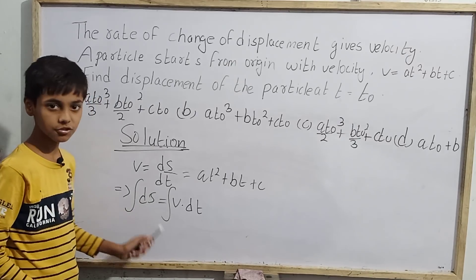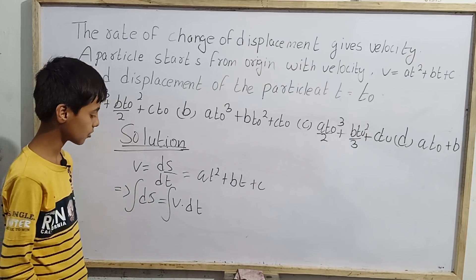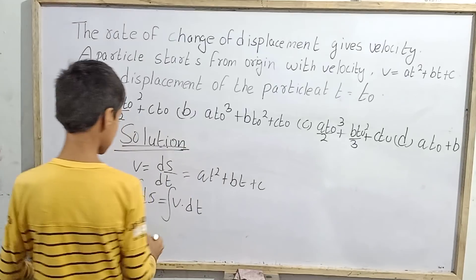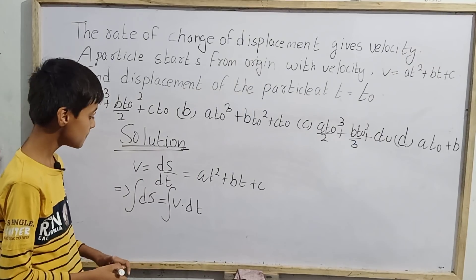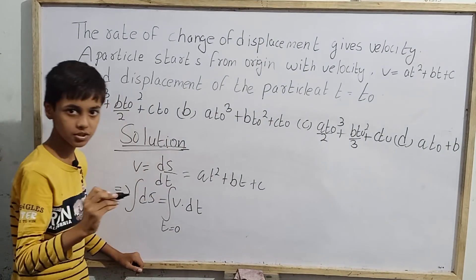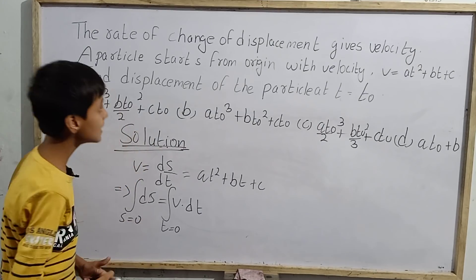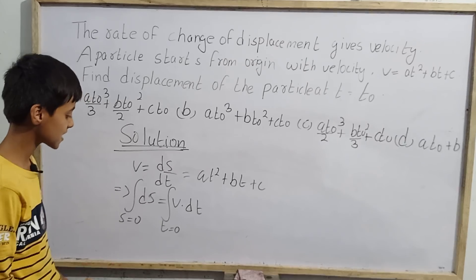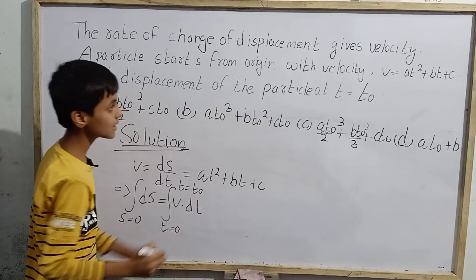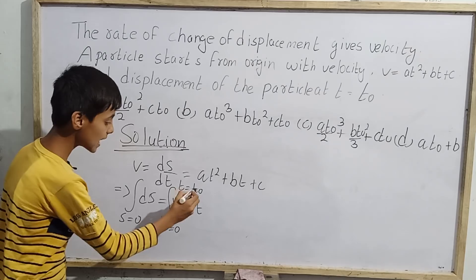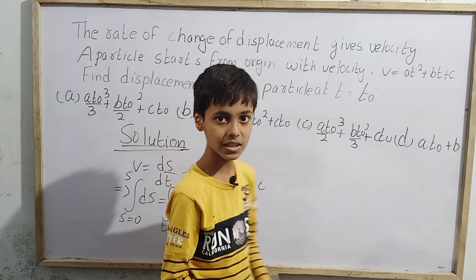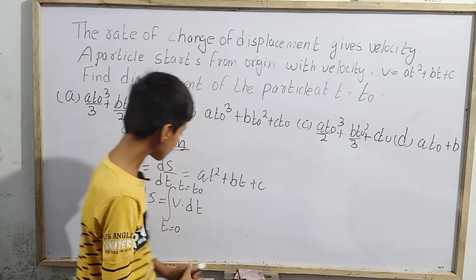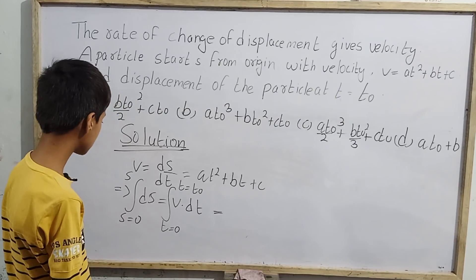We integrate both sides and choose limits. Since the particle starts from the origin, at time t = 0, displacement is zero. At time t = t₀, let the displacement be s. So the limits are: for the left side, s goes from 0 to s; for the right side, t goes from 0 to t₀.